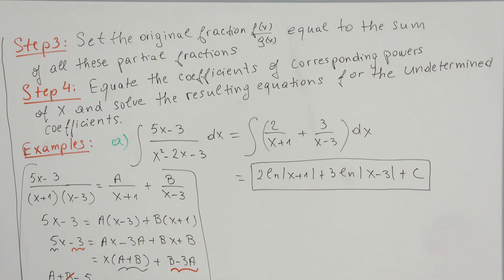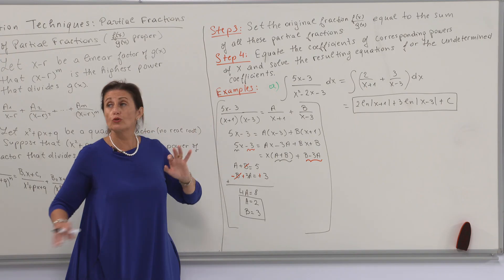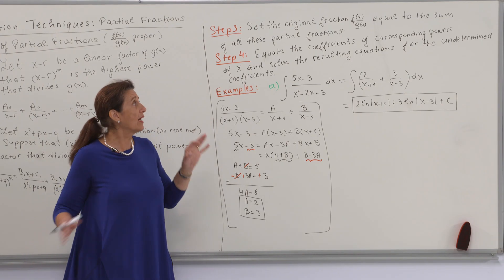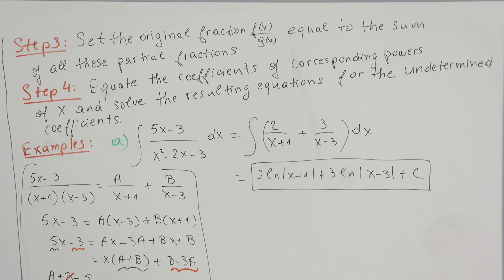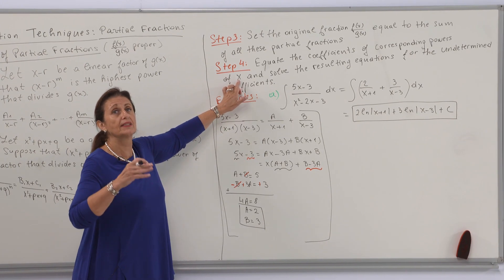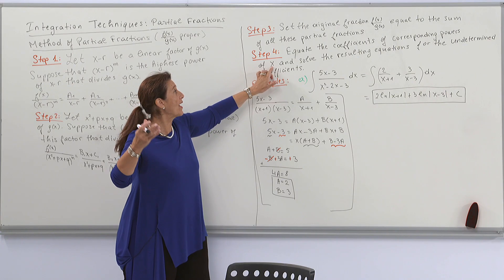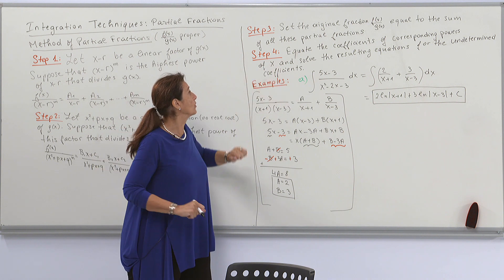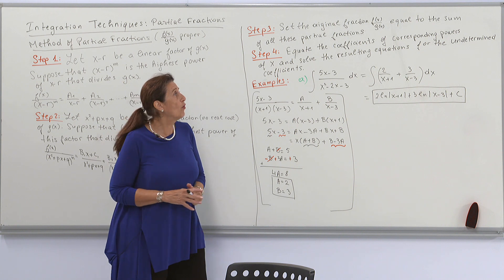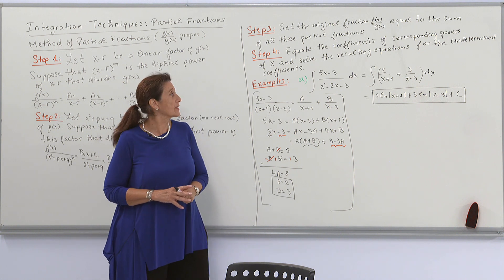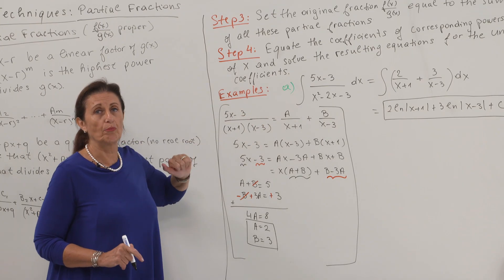Step three. Set the original fraction f of x over g of x equal to the sum of all the partial fractions found. Then equate the coefficients of corresponding powers of x — such as x³, x², and so on — and solve the resulting equations for the undetermined coefficients. Now let's have an example.